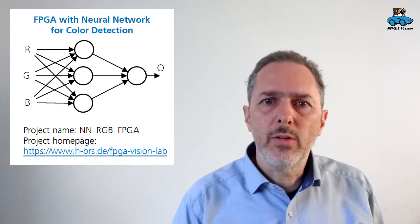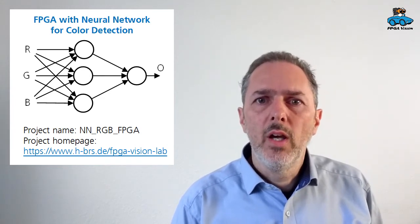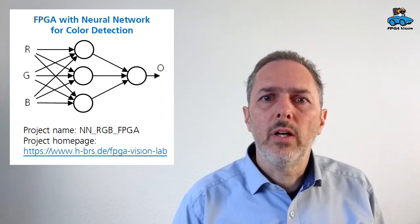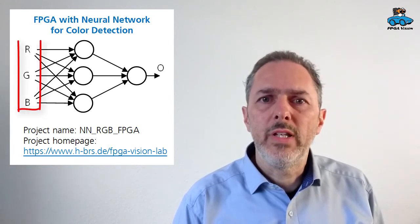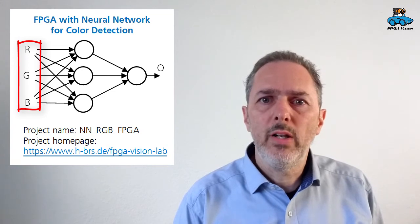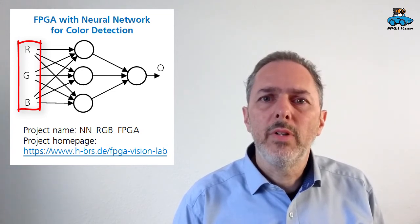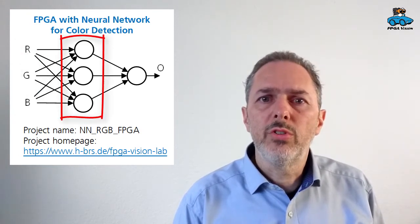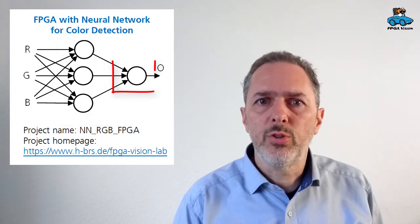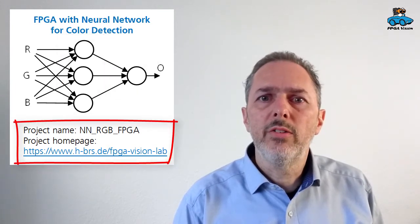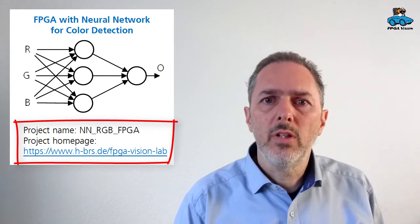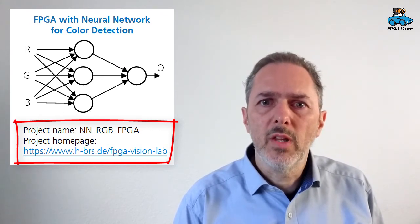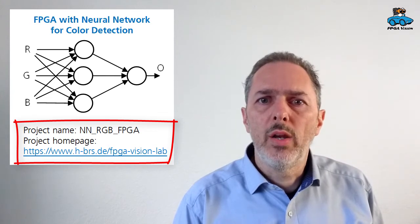Hello and welcome to an FPGA vision lecture. In this series, we have a look at neural network implementation with an FPGA. In a previous video, I have shown you this structure where we have three input signals: red, green, and blue value of a pixel. From this information, we want to detect certain colors using three neurons in a hidden layer and one output neuron. The project name is NN_RGB_FPGA, and you find the link to the source code on our homepage.